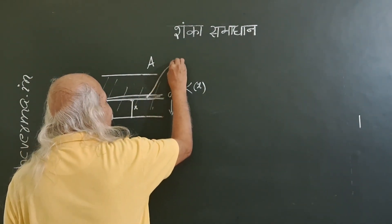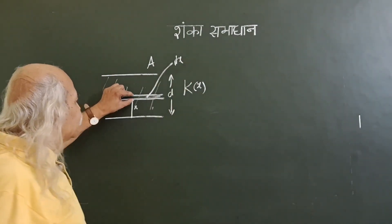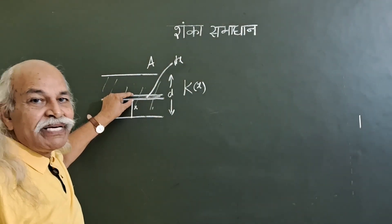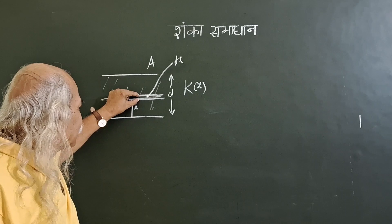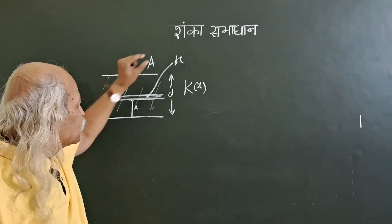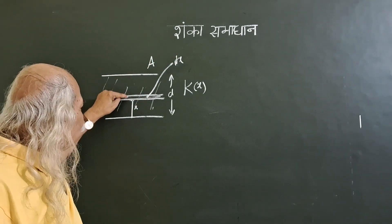suppose this is at x, you take a distance dx here. You take a distance dx here and say that this makes a capacitor with this small separation between these two assumed plates.